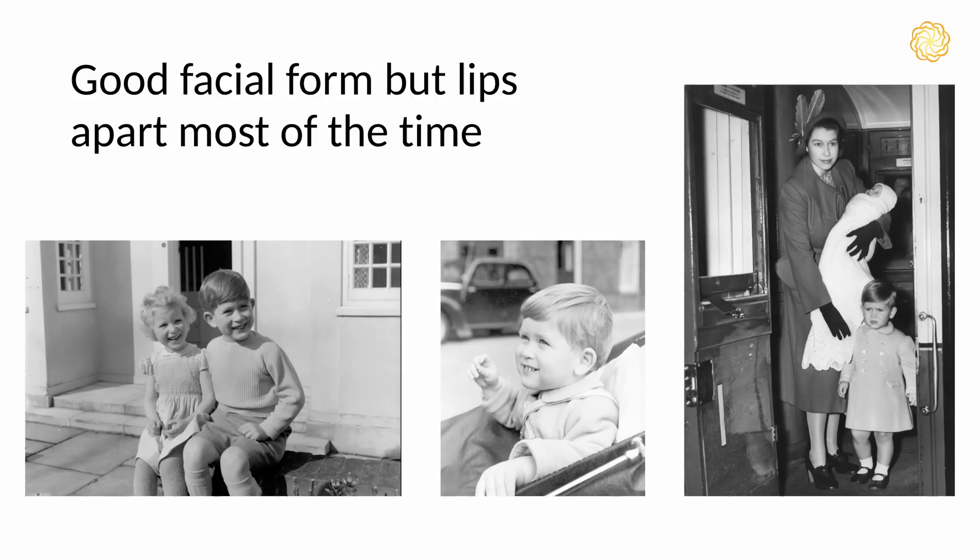Here are some images of Charles as a young boy. From the middle image you can see he's got really good, cracking facial form. But in the other two images his lips are apart — one smiling, the other clearly not smiling but lips still apart. Lip seal is an important thing in determining facial outcome.